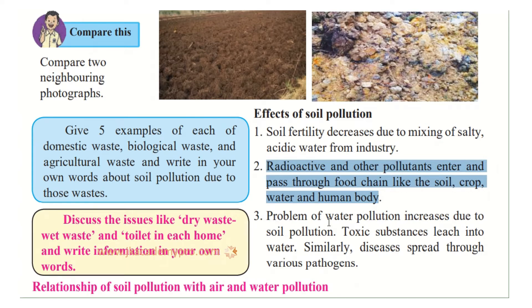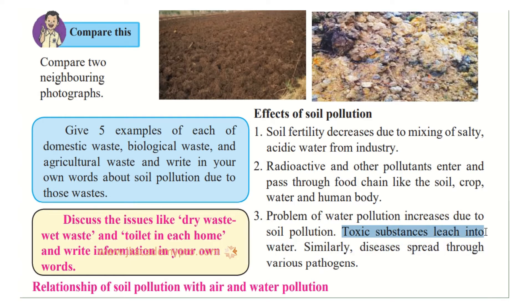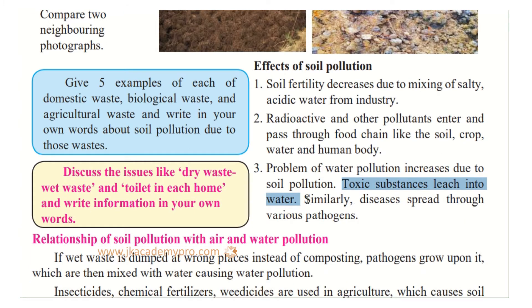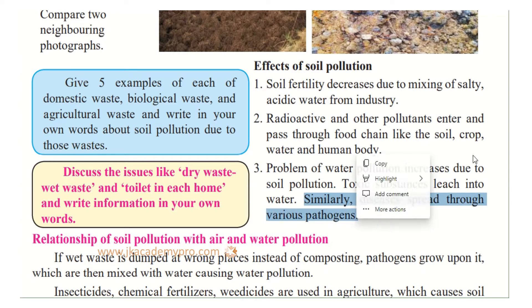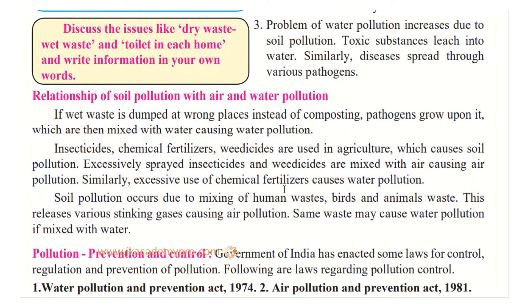The third effect is that the problem of water pollution increases due to soil pollution. When it rains, rainwater carries pollutants from the soil into rivers and oceans, affecting water bodies. Toxic and hazardous substances leach — meaning they spread — into the water. Similarly, diseases spread through various pathogens, which are microorganisms that grow and cause harm to us.